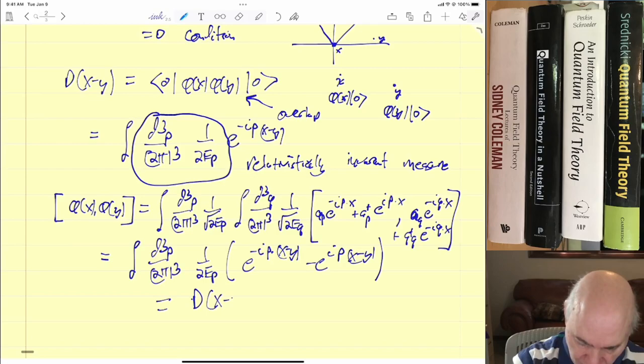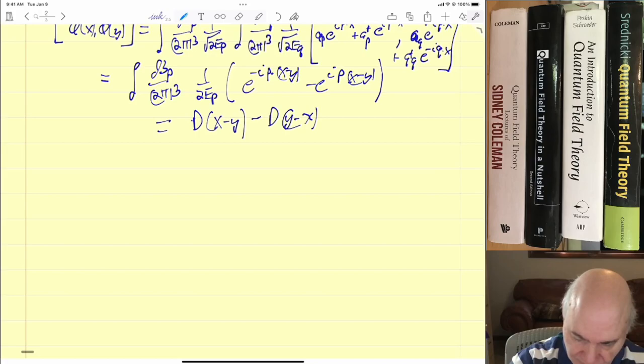And then when you just evaluate these with the delta functions and using the commutation relations on the creation and annihilation operators, you get the integral of d³p over (2π)³, 1 over 2Ep, e^(-ip·(x-y)) minus e^(ip·(x-y)). And this is equal to, as we define the D function above, this is exactly that. So this is equal to D(x-y). And here we have to get a minus sign in the exponent in order to get it in the D form over here, so we write this as D(y-x).